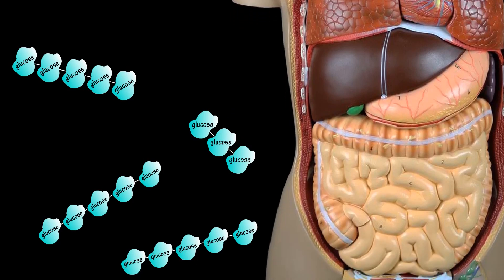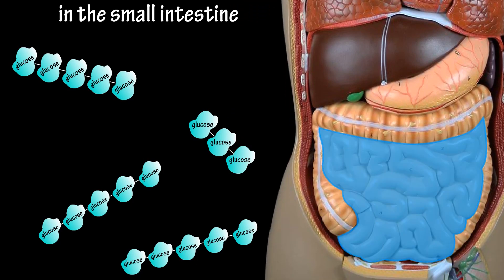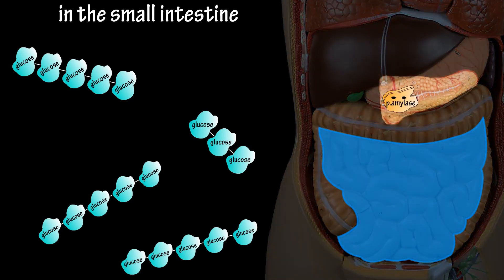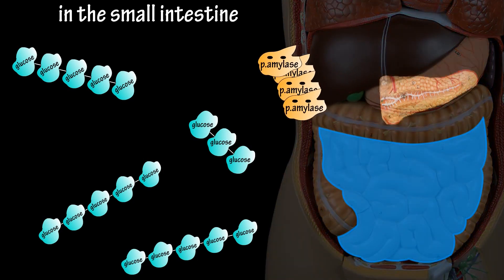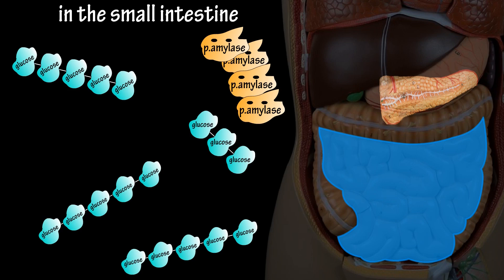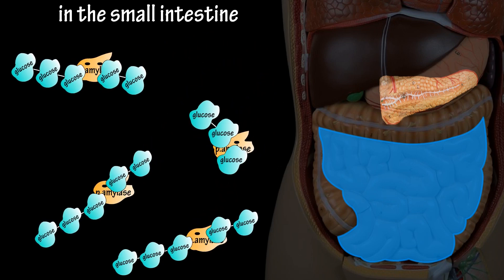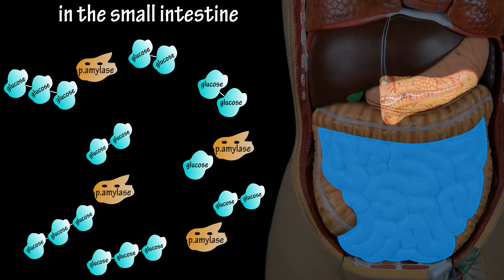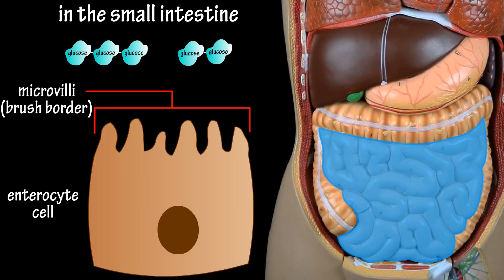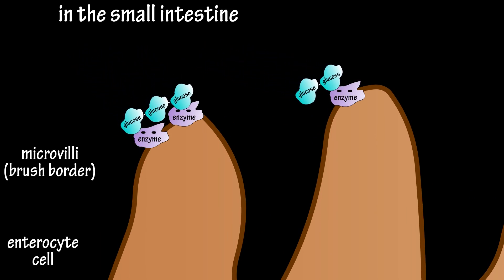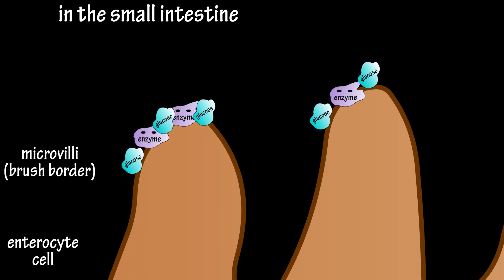As the bolus moves from the stomach into the duodenum and jejunum, which are the first parts of the small intestine, the pancreas releases pancreatic juice into the small intestine. This juice contains pancreatic amylase, which is an enzyme that continues the breakdown of starch into shorter strands of glucose. The brush border or microvilli, which are tiny hair-like projections located on the enterocyte cells of the small intestine, also contain enzymes that finish the breakdown of starch into single glucose molecules ready for absorption.